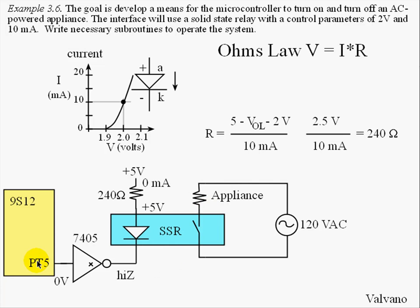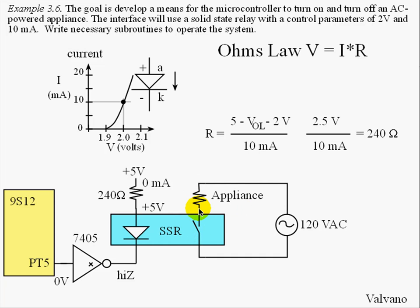Next, if the software sets this pin to a 0, there will be 0 volts here, and the 7405 open collector driver will have a high impedance output, so no current can flow. Since no current flows through this resistor, this point will also be at 5 volts, and this LED will be off. The solid state relay will open the switch and no power will be applied to the appliance.